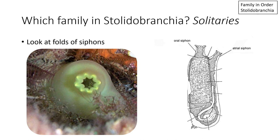For solitary Stolidobranchia, how do you tell which family it belongs to? You look at the folds, also known as lobes, of the siphons. The oral siphon is in the same plane and the same axis orientation as the body — it is anterior to the rest of the body. The oral siphon is where the animal brings water in so that it can feed and respire. The atrial siphon is off at an angle, and it is where water that is no longer needed is released, as well as feces, sperm, and eggs.